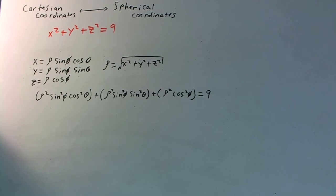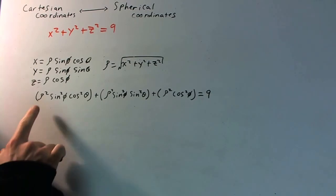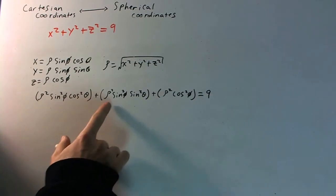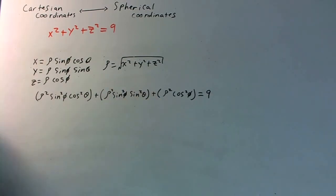I know this looks really intimidating — you have sines squared and cosines squared and all kinds of stuff all over the place. But if you notice, there is a rho squared in each of these three terms, so we can actually factor that out. Let's do that, and hopefully we'll get something that looks a little bit better, and we'll see where to go from there.